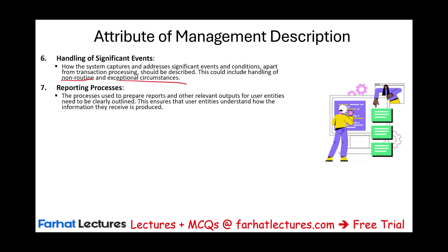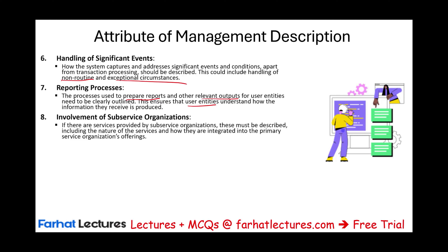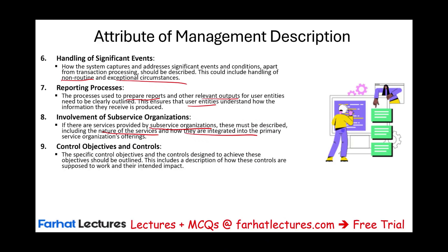Reporting processes used to prepare reports and other outputs for the user entity need to be clearly outlined so the user entity understands how the information they receive is produced. Any involvement of a subservice organization must also be described, including the nature of their services and how they are integrated into the service organization's offering. Specific control objectives and controls designed to achieve those objectives should also be outlined, describing how these controls are supposed to work and their intended impact.